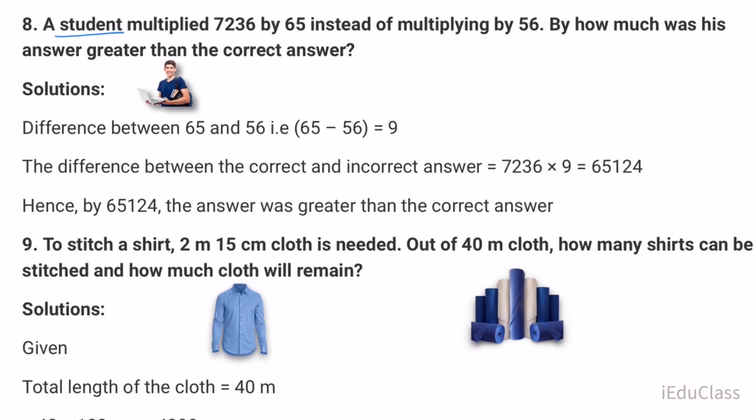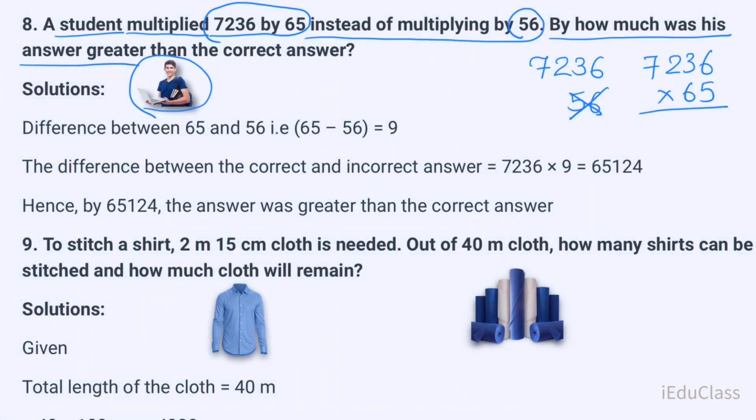Question number eight: A student multiplied 7236 by 65 instead of multiplying by 56. By how much was his answer greater than the correct answer? Solution: The difference between 65 and 56 is 9. The difference between the correct and incorrect answer is 7236 times 9 equals 65,124. His answer was greater than the correct answer by 65,124.